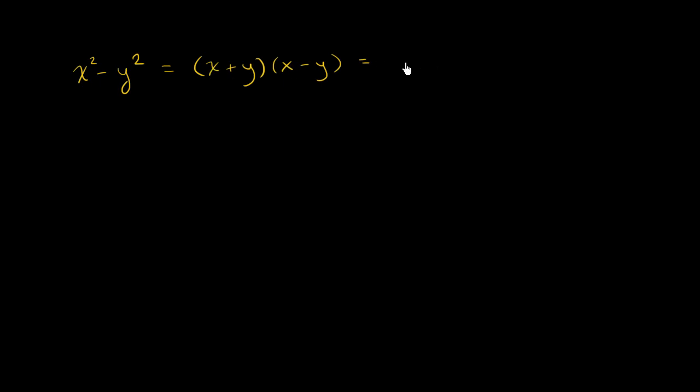x times x is x squared. x times negative y is negative xy. y times x is positive xy. And then y times negative y is minus y squared. These two middle terms cancel out, and you're left with x squared minus y squared.